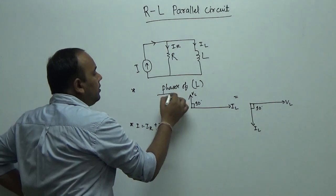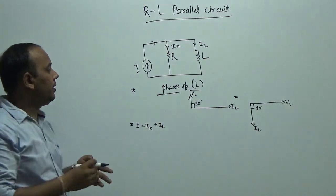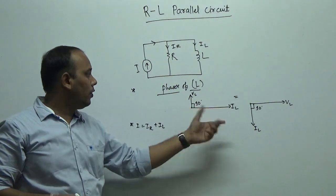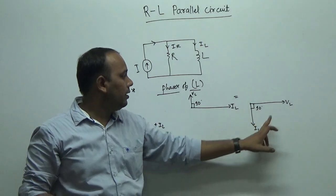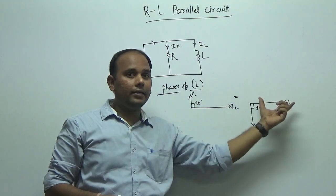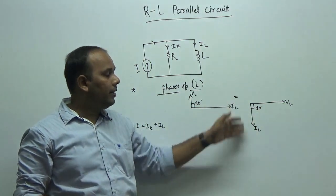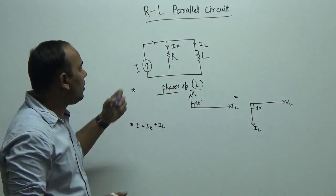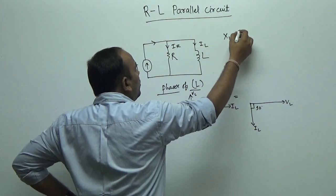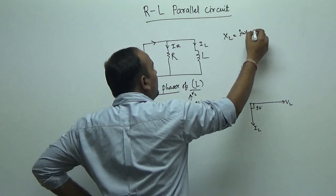The phasor of L shows that VL will be at 90 degrees with respect to IL. This is one form, and we can say this is the second form. So if VL is in the x-direction, then IL is in the negative y-direction. Also, XL is equal to j·omega·L, which is the reactance.